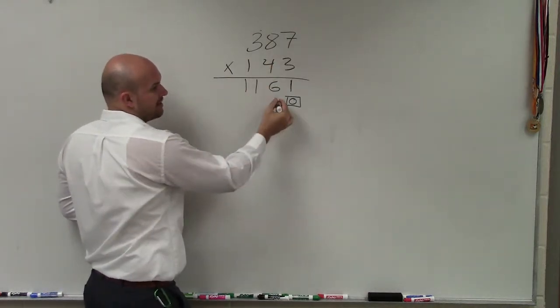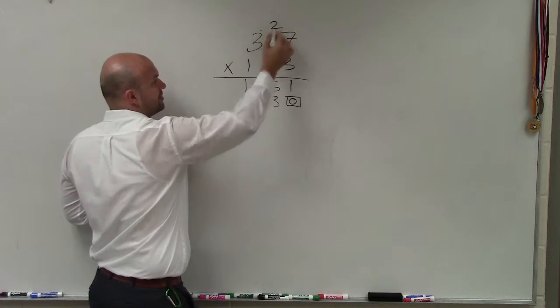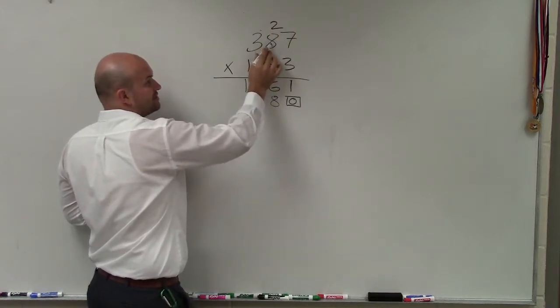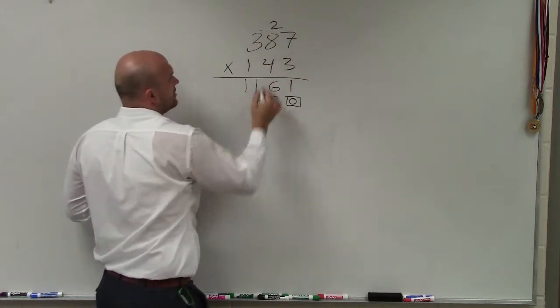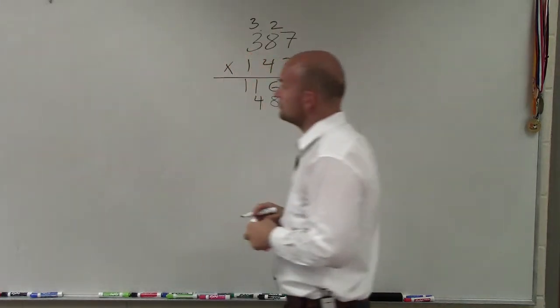So now I do 4. 4 times 7 is 28. I write the 8 here and then 2 up here. 4 times 8 is 32, plus 2 is 34. So the 4 up here, and then I do the 3 here.